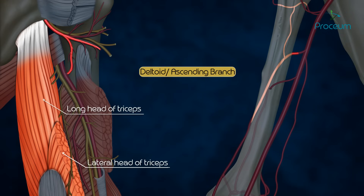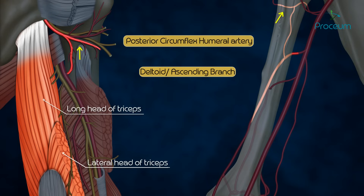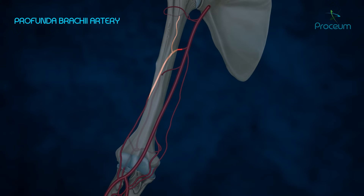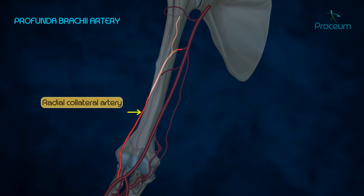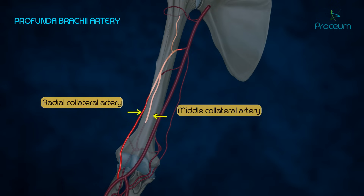The deltoid or ascending branch anastomoses with the descending branch of the posterior circumflex humeral artery. An anterior or descending branch, also known as the radial collateral artery, takes part in the anastomosis around the elbow. A posterior descending branch, also known as the middle collateral artery, also takes part in the anastomosis around the elbow, and a nutrient branch to the humerus.